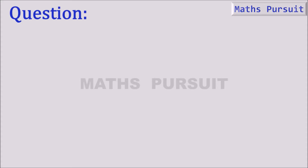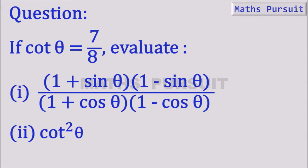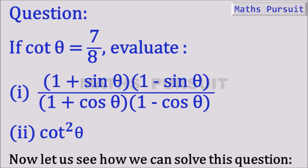Moving on to the question: it is given that if cot θ = 7/8, evaluate — number 1: (1 + sin θ)(1 − sin θ) / (1 + cos θ)(1 − cos θ), and the second one is cot squared θ. Now let us see how we can solve this question.